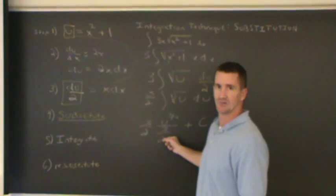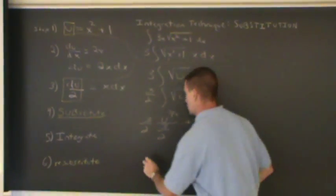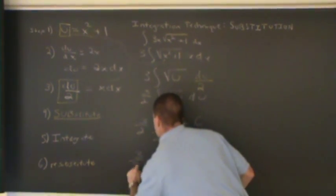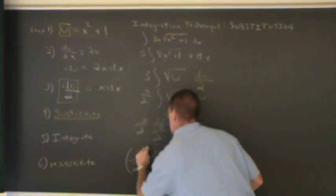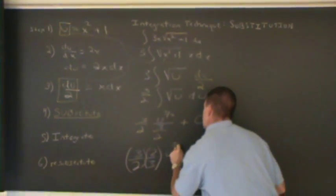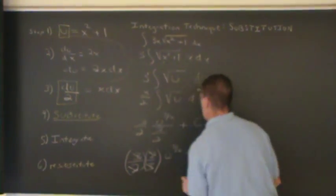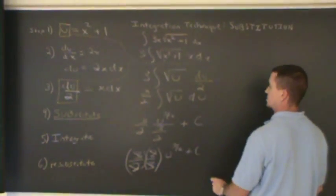And when we divide by three halves, that means we multiply the reciprocal, which would be multiplying by two thirds. We have three halves times two thirds, u to the three halves plus c. Yep, these just cancel out. And we have u to the three halves plus c.